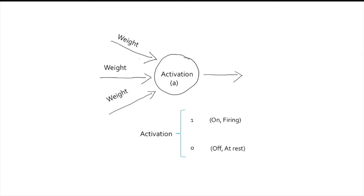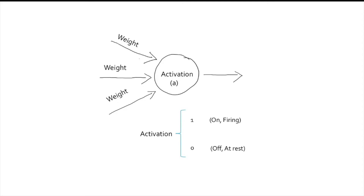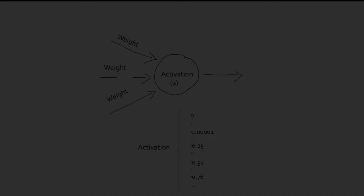Each of the units also has what is called an activation value, which can be represented either as a state with two values — on, off, firing, or at rest — or as a state that can take continuous values, such as 0, 0.1, 0.25, etc.